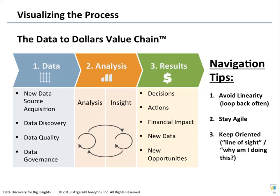The value chain picture looks linear, but the way you use it is definitely not. The navigation tips are: avoid linearity, loop back often — any time it would be useful — and data discovery is going to help with that. Stay agile. And keep oriented: no matter where you are, it's important to know why you're doing what you're doing and what you're trying to get out of it, which basically means begin with the end in mind, understand the key drivers of your results, and maintain line of sight from wherever you are.